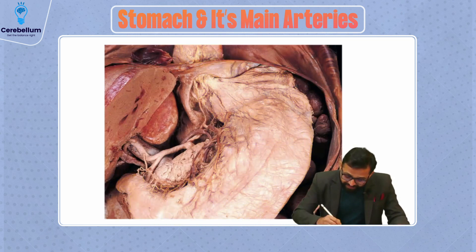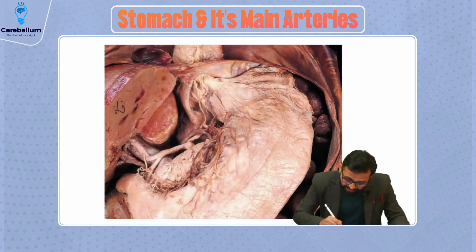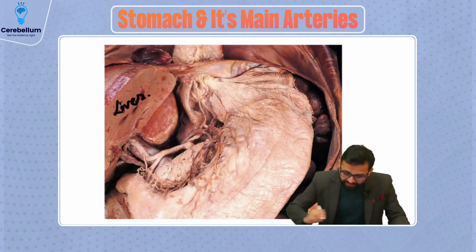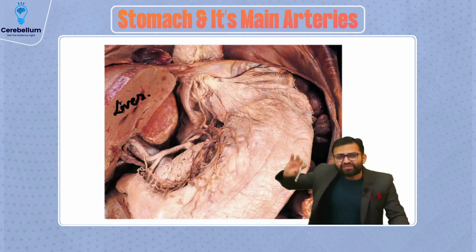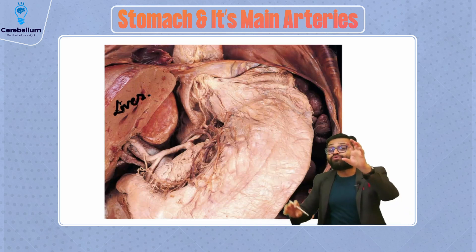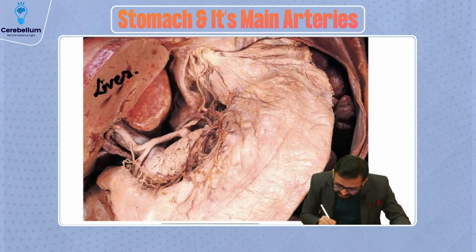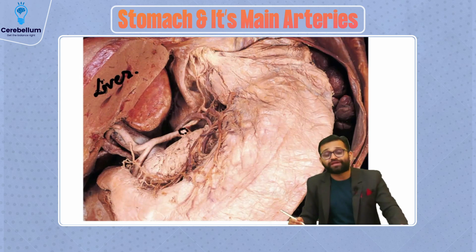You can see easily this is our liver. Now you can see the thick presentation of our vessels. This is the part which is showing our celiac trunk, which is a direct branch of the abdominal aorta.